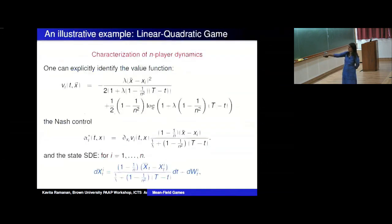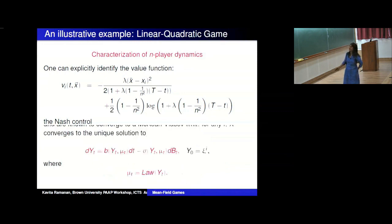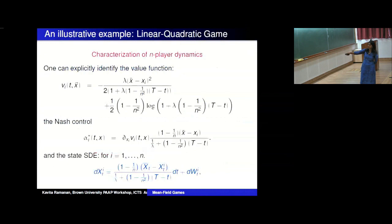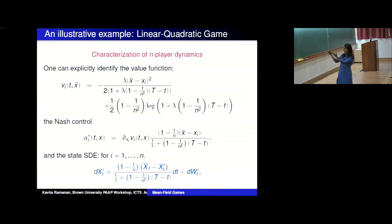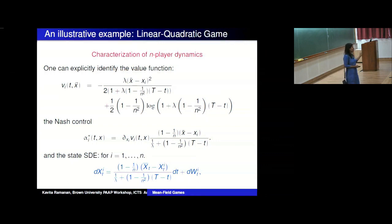In that linear case you can write down what alpha_i^* is explicitly — just the derivative of the value function. You then have an explicit state SDE. This is tractable in the linear case. Now for the general case, even if you could solve the N-player game and say there exists a solution, you'd get an N-particle system where the drift coefficients depend on N, and it's not clear how to take the limit.